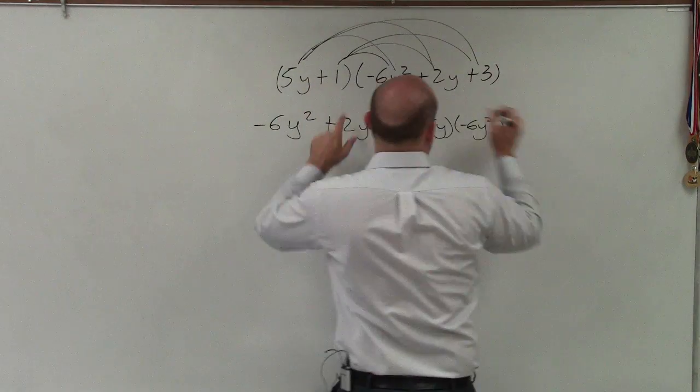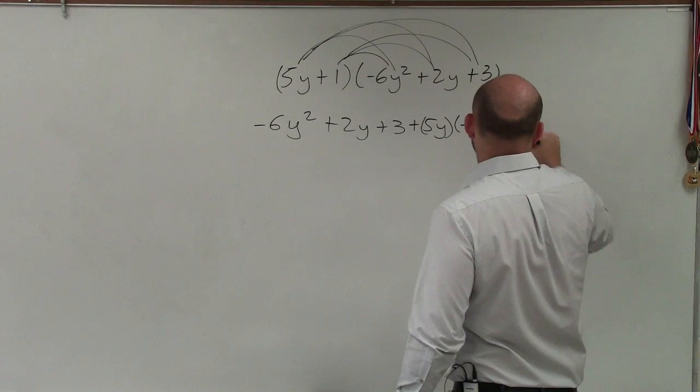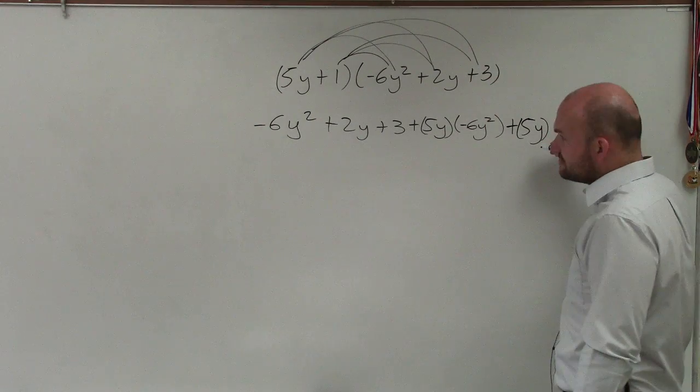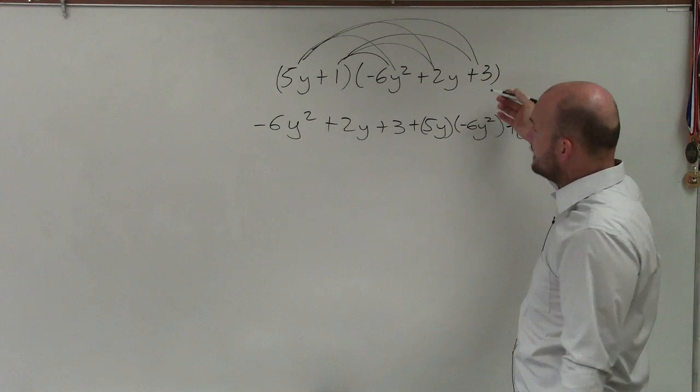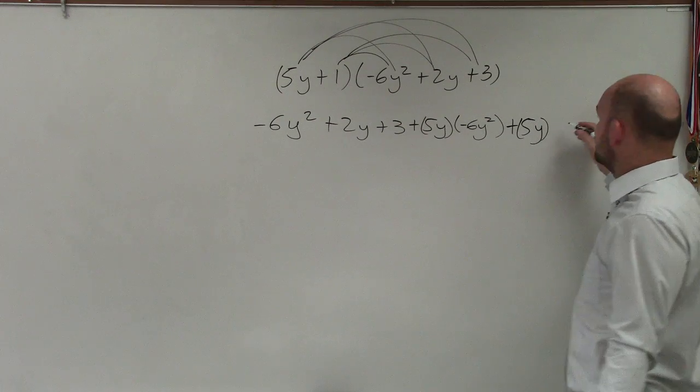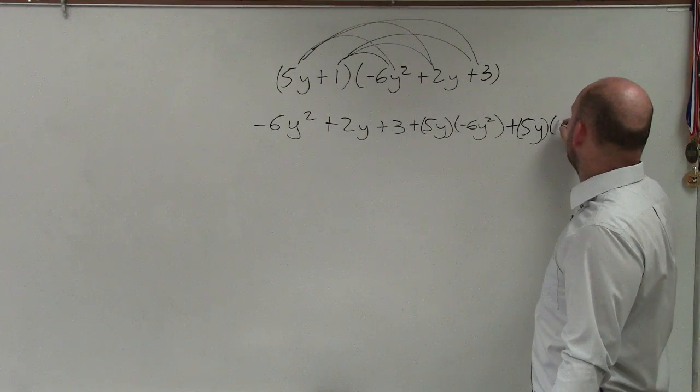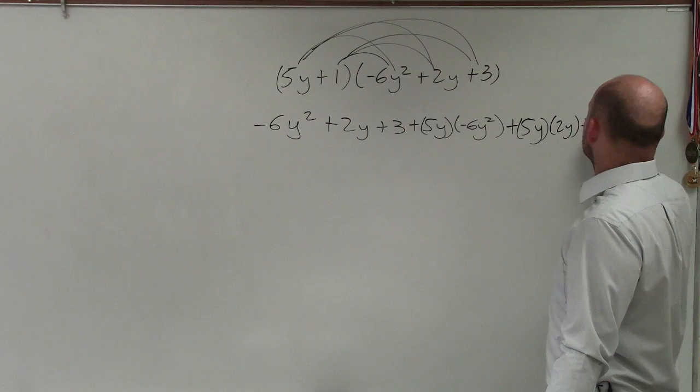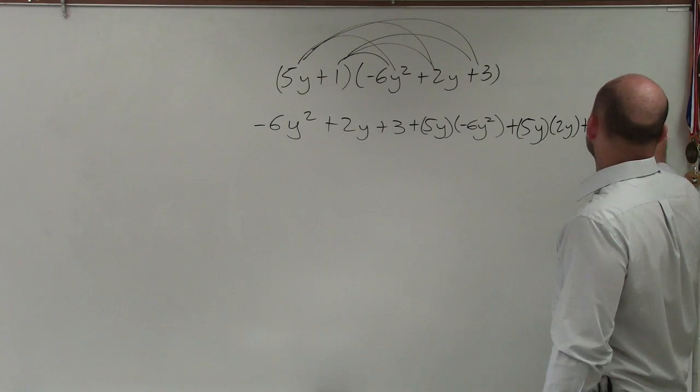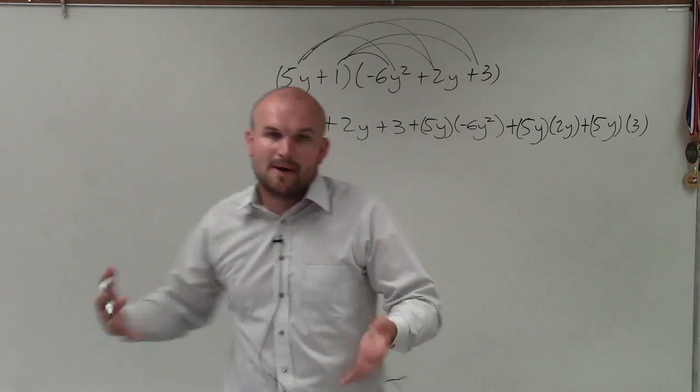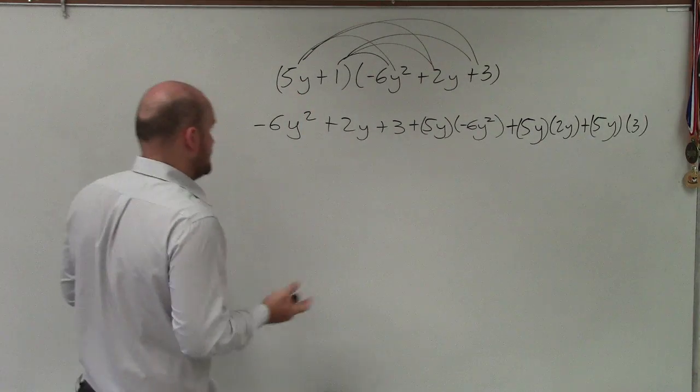However, here, when we're multiplying, I'm going to want to write these out. Now, this is all positive 5y, so that's where I'm writing plus 5y. If it was negative, then I'd put this subtraction symbol there, times 2y, and then plus 5y times 3. Now, I'm using parentheses to represent my multiplication.